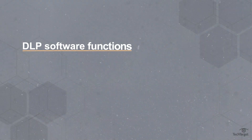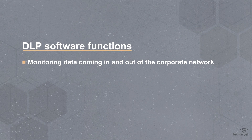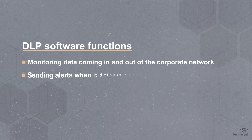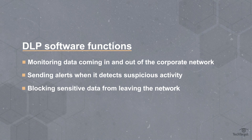To prevent data leaks and breaches, DLP software performs three core functions: monitoring data coming in and out of the corporate network, sending alerts when it detects suspicious activity, and blocking sensitive data from leaving the network.